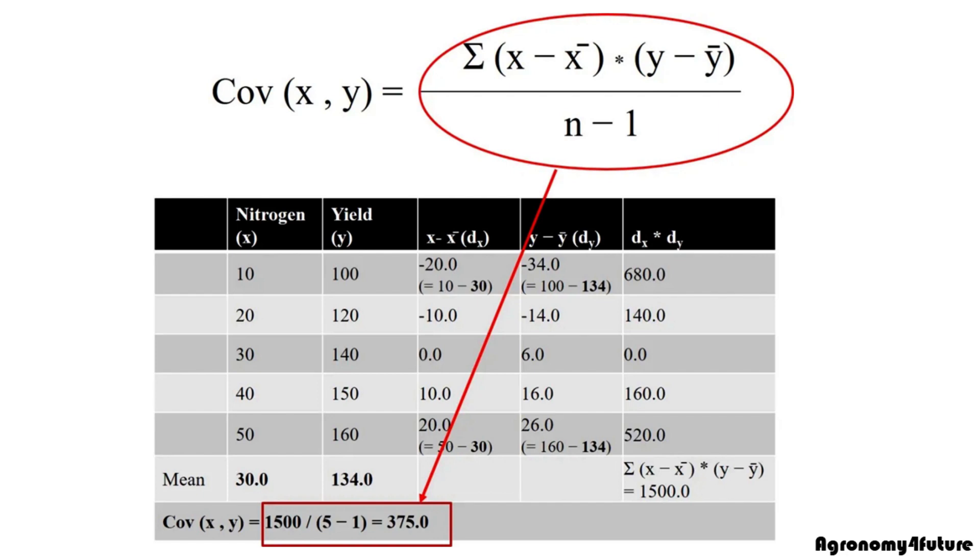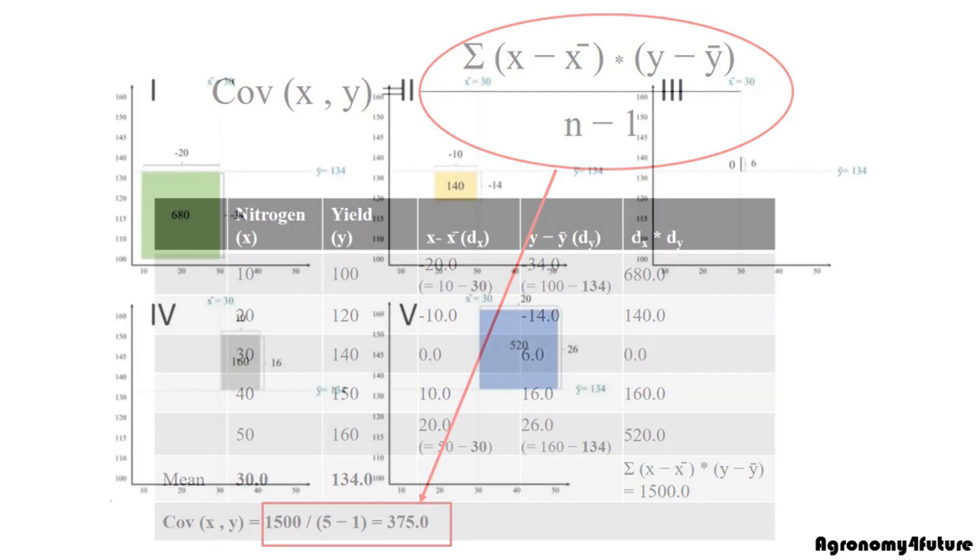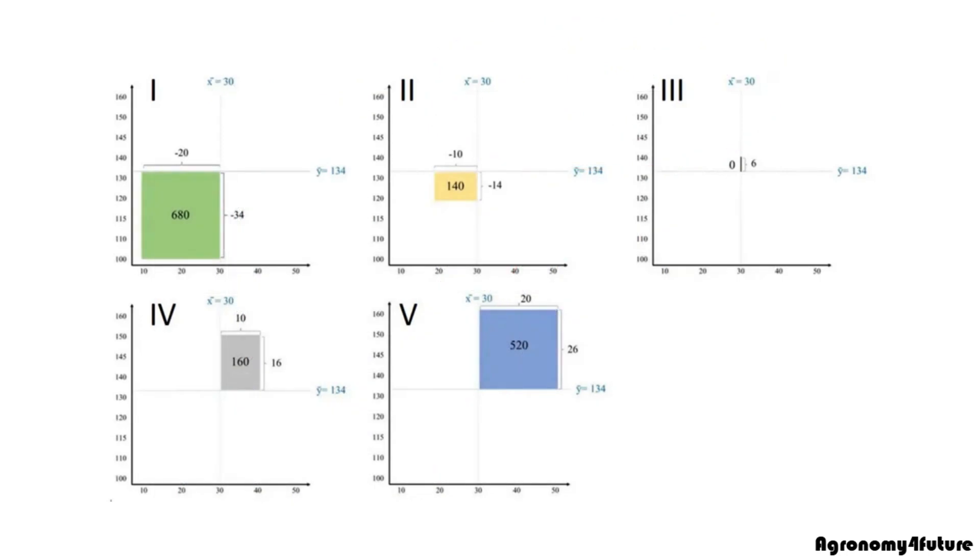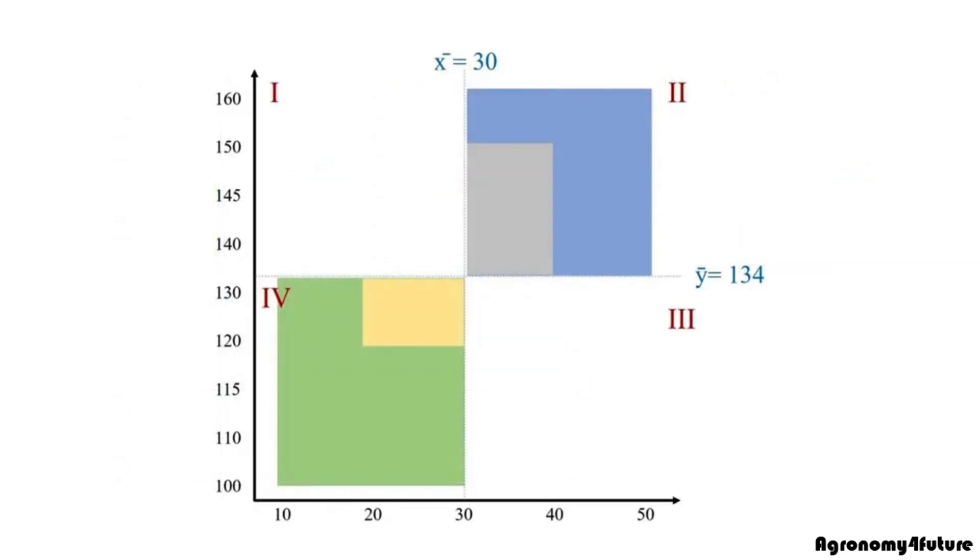What does this 375 indicate? Do you think if this value is bigger, it would be good to explain the relationship between two variables? Let's draw each deviation x and y in the quadrant. For example, when deviation x is minus 20 and y is minus 34, the box would be like figure 1. If we combine all boxes together, we can obtain this figure. All boxes are located at second and fourth quadrant. What does it indicate?